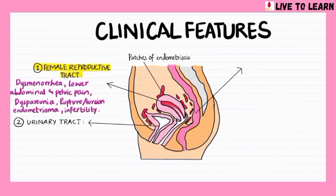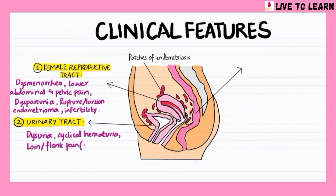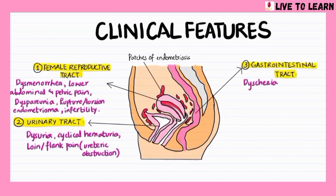Endometriosis involving the urinary tract leads to dysuria, which is painful urination, cyclical hematuria, and flank pain due to ureteric obstruction. Endometriosis affecting the gastrointestinal tract leads to dyschezia, which is painful defecation. It also leads to cyclical rectal bleeding and obstruction.